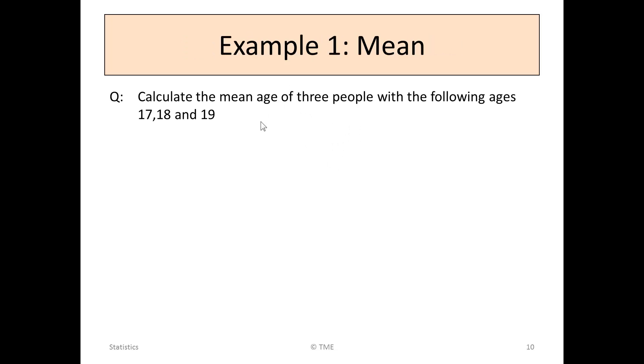Example 1: Calculating a mean. Calculate the mean age of three people with the following ages: 17, 18 and 19.